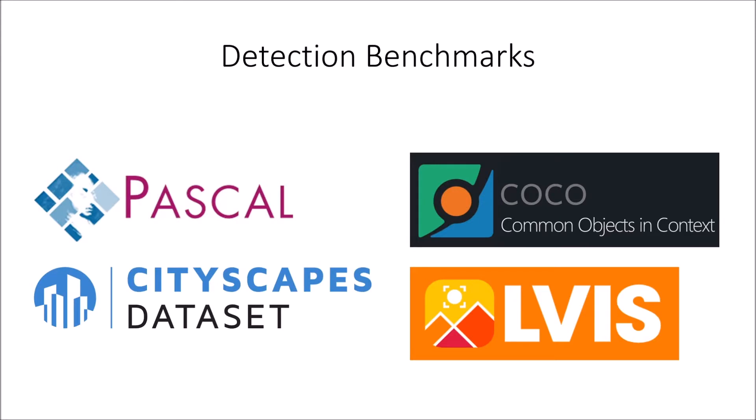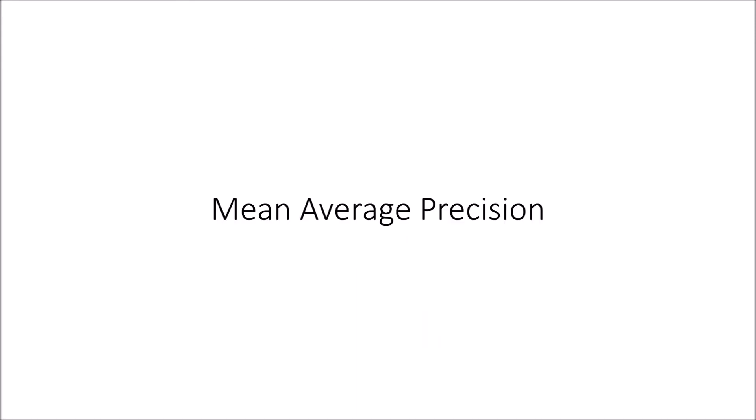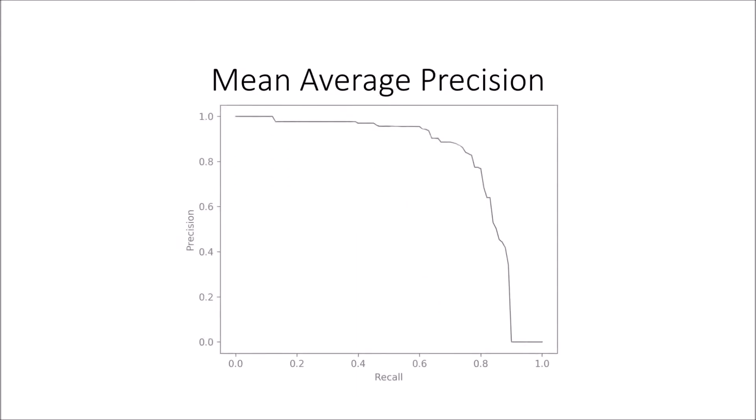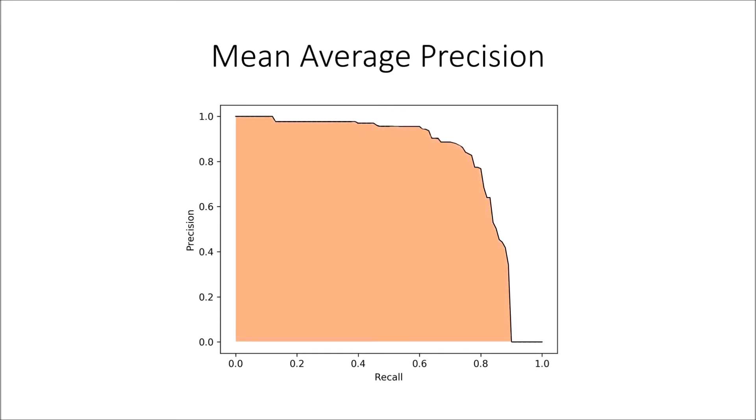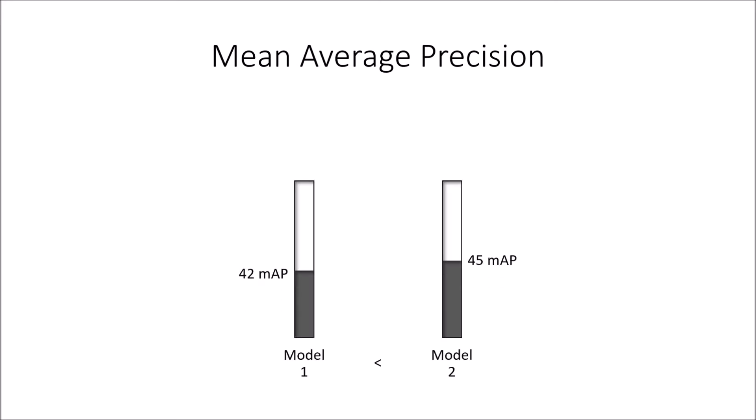Typically, performance on these benchmarks is summarized by one number, mean average precision, which is a complicated term that involves integrating over a precision recall curve and averaging over several criteria. While MAP is good for determining the best model in a competition, it's a very complicated and high-level summary of a model's performance. In most practical applications, we need more granular information about the model's strengths and weaknesses.